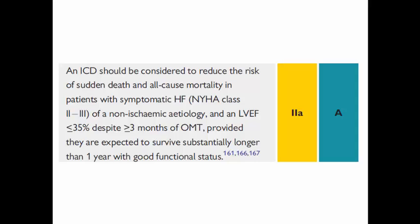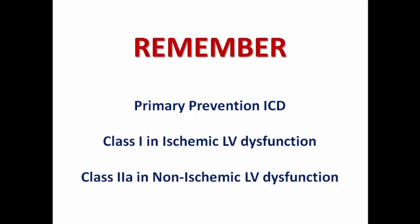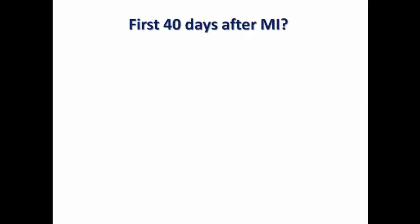ICD has a Class 2a recommendation to reduce the risk of sudden death and all-cause mortality in patients with symptomatic heart failure NYHA Class 2 to 3 of non-ischemic etiology, with ejection fraction less than 35% despite three months of optimized medical treatment, expected to survive longer than one year with good functional status. The criteria are the same as for the ischemic recommendation, excluding the 40-day post-MI restriction. So remember: primary prevention ICD is Class 1 for ischemic LV dysfunction and Class 2a for non-ischemic LV dysfunction.